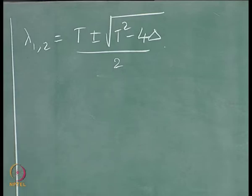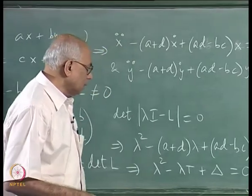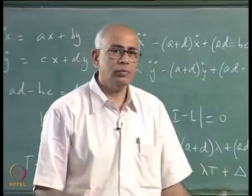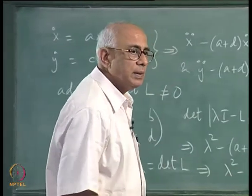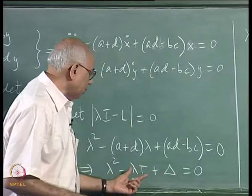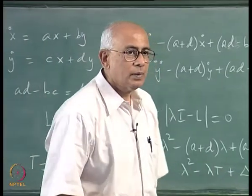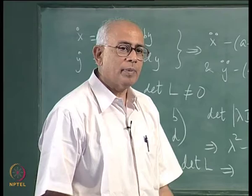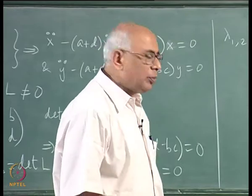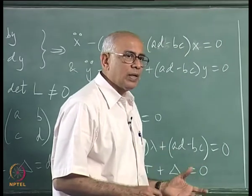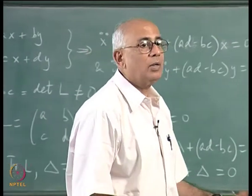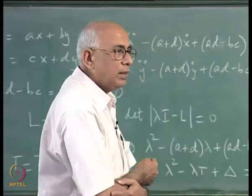The eigenvalues depend only on the trace and the determinant, not on all four coefficients a, b, c, d individually — just these two combinations. This is going to play an important role. Under a similarity transformation on the matrix, the trace does not change and the determinant does not change, which means that if I transform variables from x and y to linear combinations by a coordinate transformation, the eigenvalues would not change.